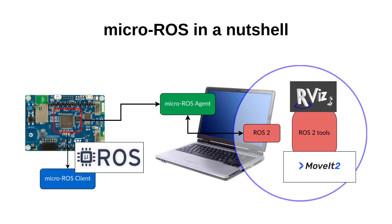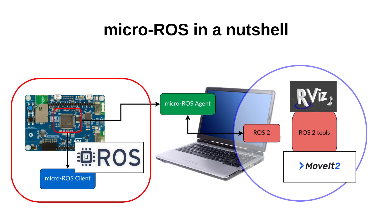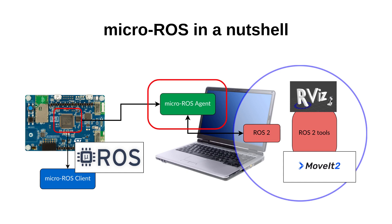Micro-ROS puts ROS2 on microcontrollers, thanks to its client-server architecture. Clients are lightweight entities that run on the microcontrollers, while agents are entities that bridge the clients with the ROS2 ecosystem. This allows topics to be exchanged between standard ROS nodes running on the computer and ROS nodes running on the embedded devices.